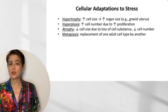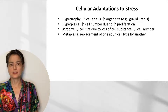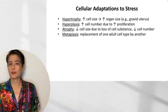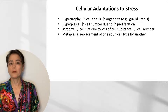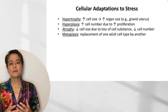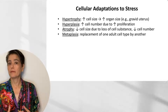These include hypertrophy, hyperplasia, atrophy, and metaplasia. Hypertrophy is increased cell size. Hyperplasia is increased cell number. Atrophy is primarily due to decreased cell size, but we can also see decreased cell number. And metaplasia is a replacement of one adult cell type by another.